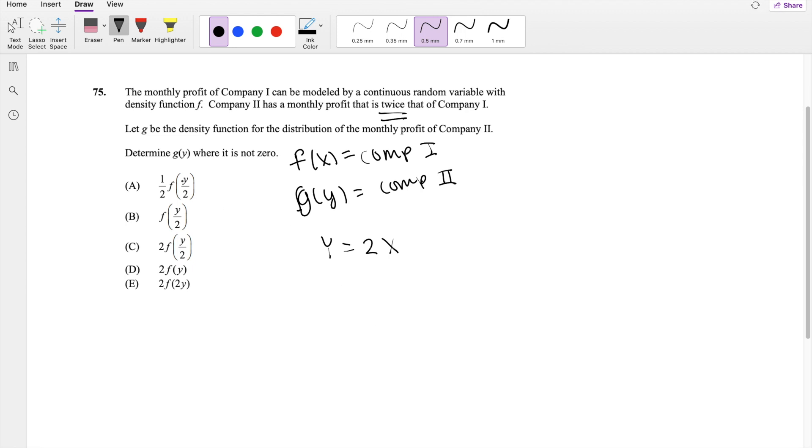We were also asked to find G of Y, the probability distribution function of Y. So it's always easiest for us, when we're doing these kind of transformation problems, to start off with the CDF. Because you know that big G of Y is equal to the probability that big Y is less than some little y.